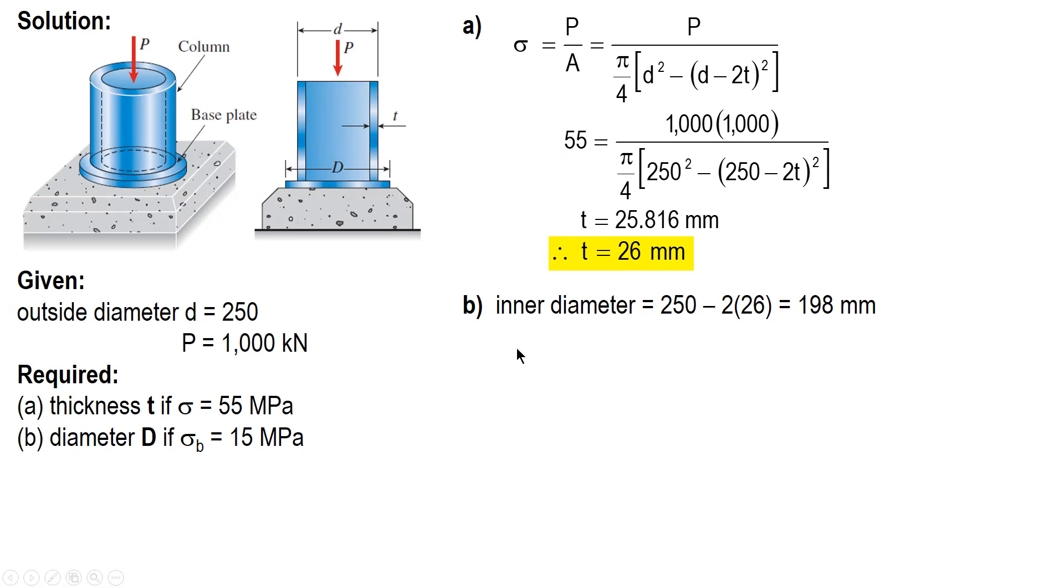So solving for the inner diameter, 198 millimeters. And using the same formula, 55 for stress, P allowable, pi over 4 outer diameter squared minus inner diameter squared gives us 1,006,314.96 newtons. Or in kilonewtons, we have 1,006.31 kilonewtons.